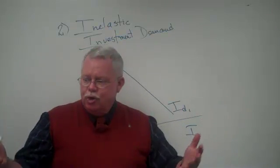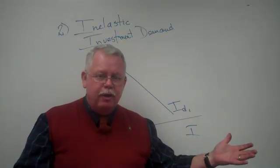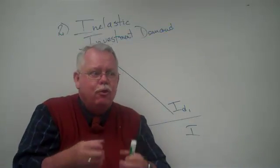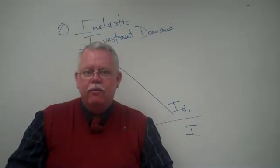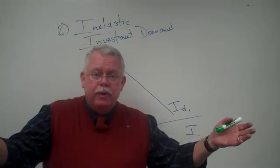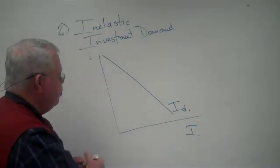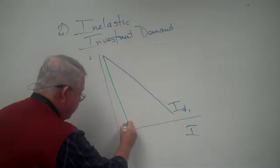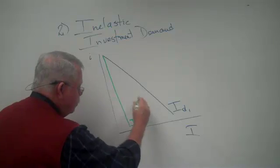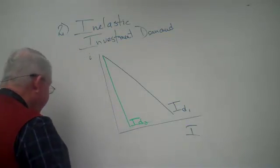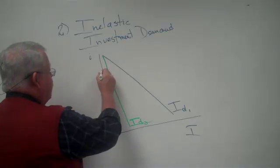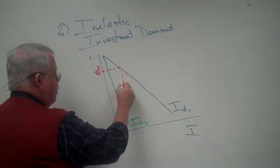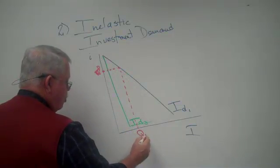But what he said was when we get into a depression, this curve is going to change. When businesses see large-scale unemployment, no sales, no activity, no spending, they're going to become afraid to invest, afraid to grow their factories, expand their factories, because nobody's buying anyway. And so in a depression this curve begins to look more like this, I-D-2.